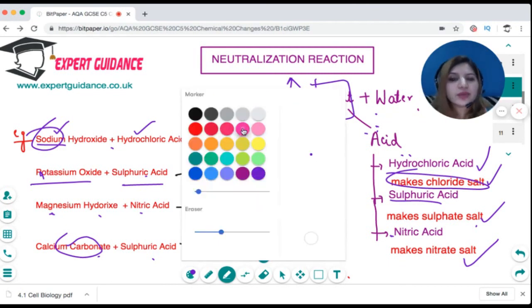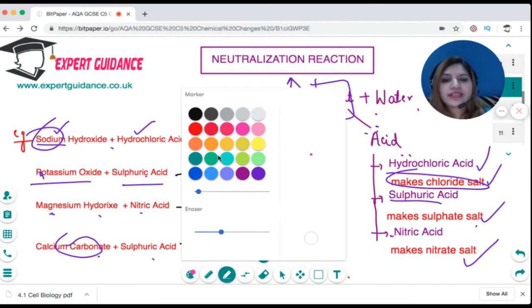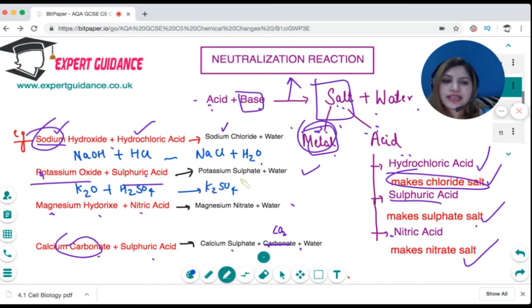In the exam they can ask you to write the word equation. You need to know how to make formulas of ionic compounds. Sodium hydroxide is NaOH reacting with HCl gives sodium chloride and water, which is already balanced. Potassium is in Group 1, oxygen has a charge of 2, so the formula is K2O plus sulfuric acid forming potassium sulfate K2SO4 because sulfate has a charge of 2-, potassium has +1, plus water.